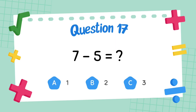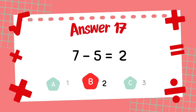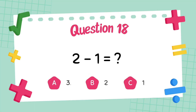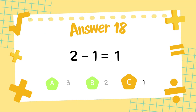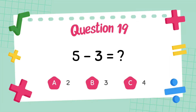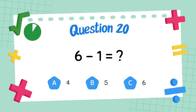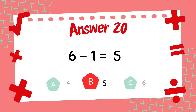What is 7 minus 5? The answer is 2. What is 2 minus 1? The answer is 1. What is 5 minus 3? The answer is 2. What is 6 minus 1? The answer is 5.